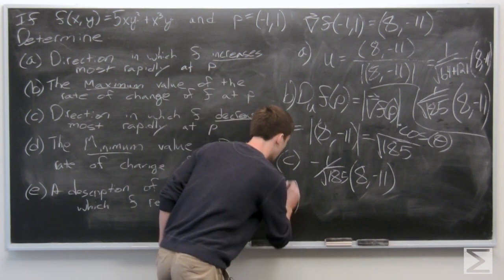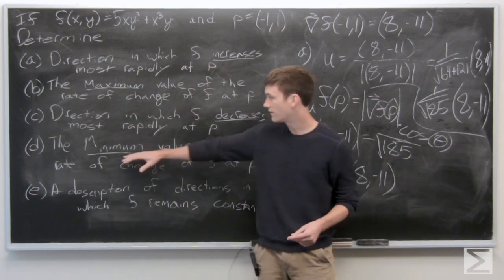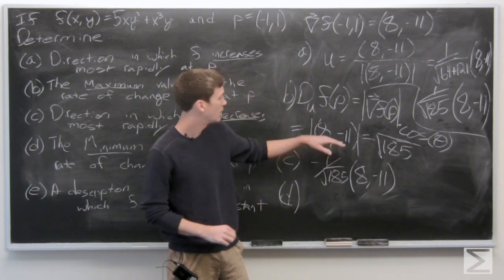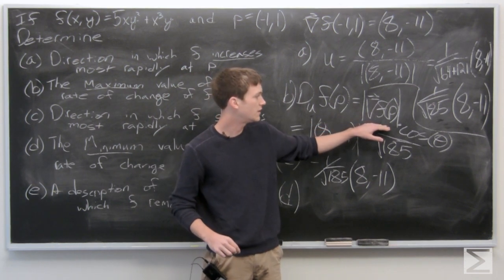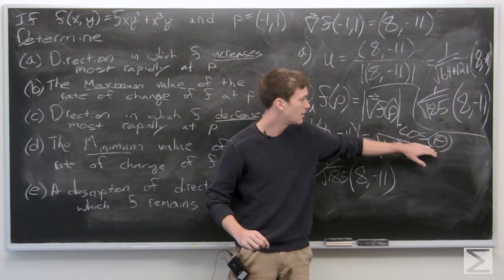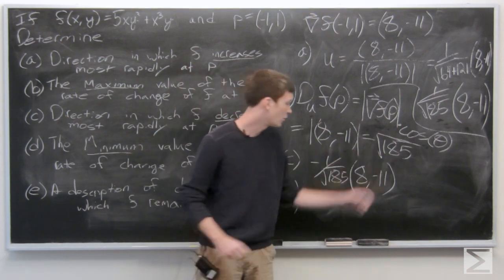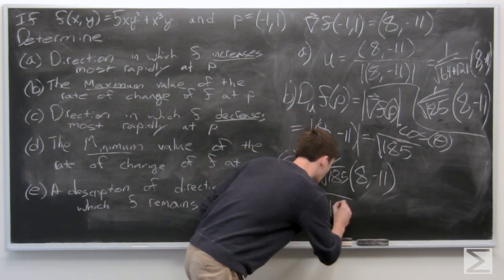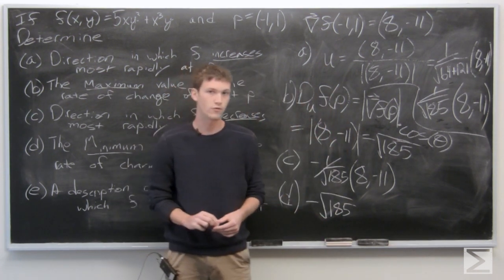For part d, similarly, we look at our answer for part b. We want to find the minimum value of the rate of change. That equals the magnitude of the gradient vector times cosine of theta. Cosine of theta is minimized at negative 1, so the minimum value is just the negation of part b, giving us negative square root of 185.